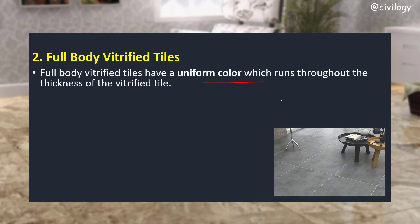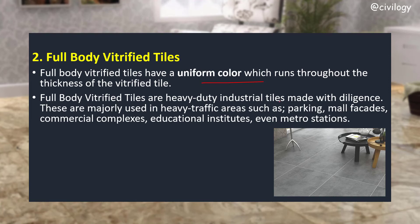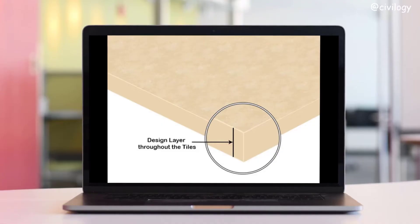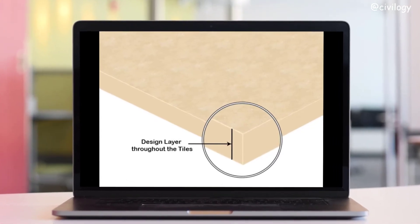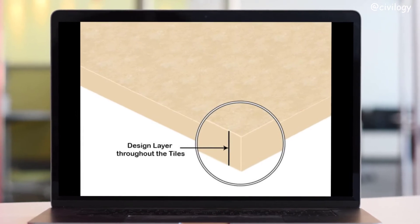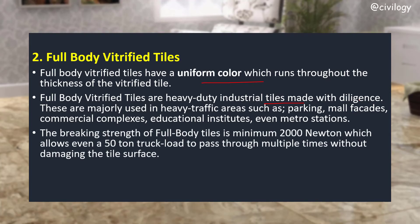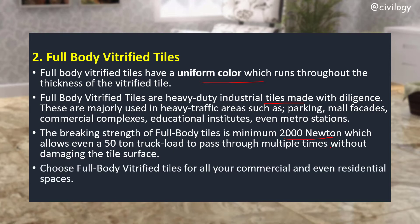Next, full body vitrified tiles. These tiles have a uniform color which runs throughout the thickness of the tile. Full body vitrified tiles are heavy-duty industrial tiles, majorly used in heavy-traffic areas such as parkings, mall facades, commercial complexes, educational institutions, and even metro stations. They are uniform in shape, color, and material, with a breaking strength of minimum 2,000 Newtons — allowing even a 50-ton truck load to pass through multiple times without damaging the surface.